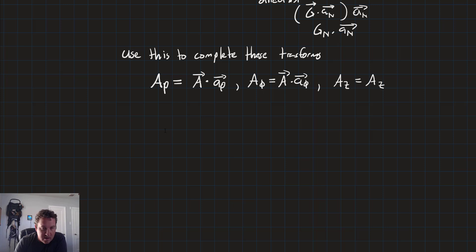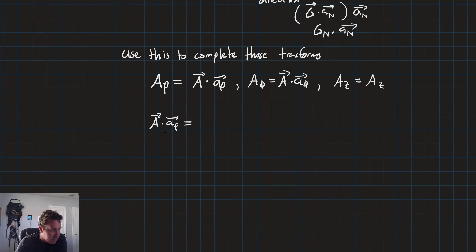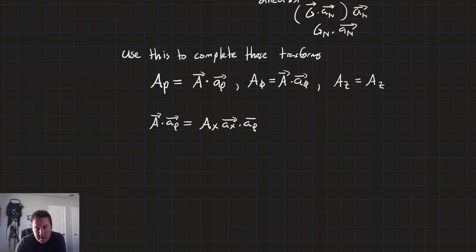Let's take a deeper look at these dot products. A · â_rho expands to: Ax·(â_x · â_rho) + Ay·(â_y · â_rho).